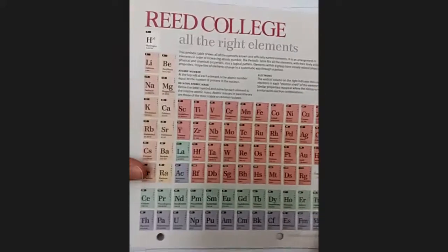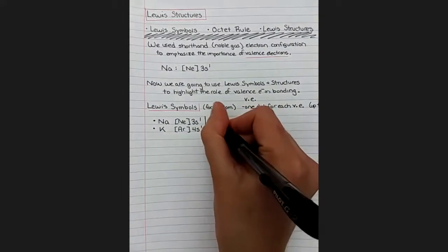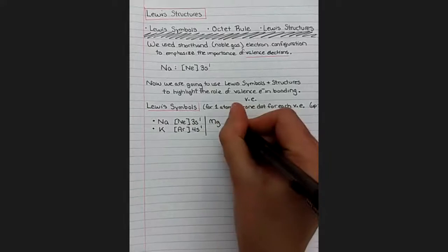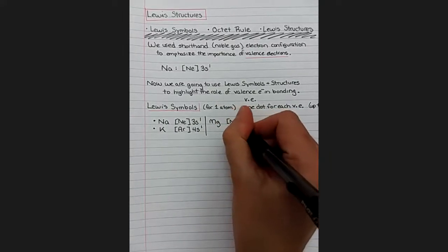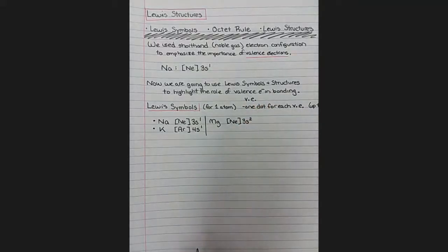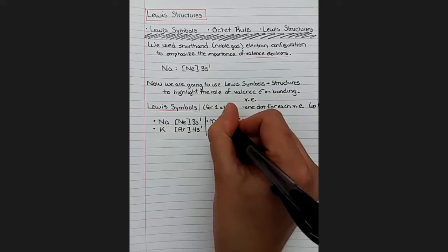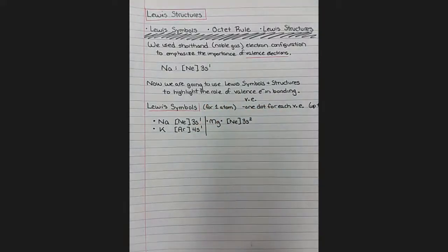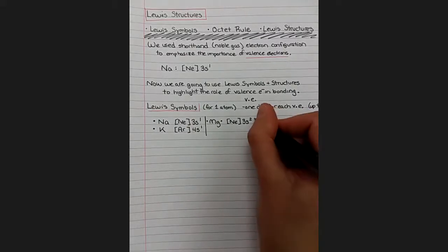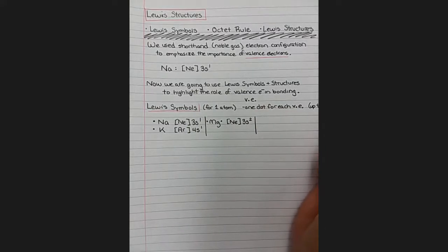If we move to the element next to sodium, that would be magnesium. Magnesium has an electron configuration of neon 3s2. So we need to include two valence electrons in our structure. Sometimes we put them next to each other, one on the side and one on the top. Sometimes one on the side and one on the other side. Depends on your book.